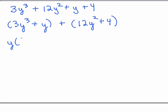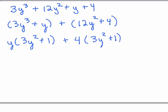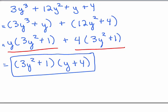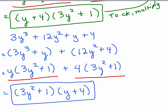In the first set of parentheses I could pull out a y, which gives me 3y² + 1, and in the second set I could pull out a 4, which gives me 3y² + 1. We have a common factor in each of the two big terms, so we can pull out 3y² + 1, leaving y + 4 — also correct. These are really the same; I've just written the factors in a different order. That's the commutative property of multiplication — it doesn't matter which parentheses you write first; there are still just two factors being multiplied together.